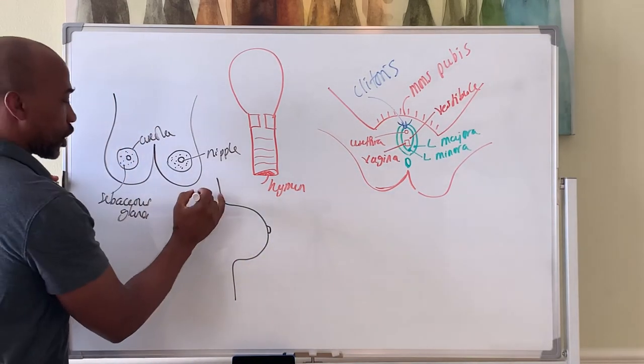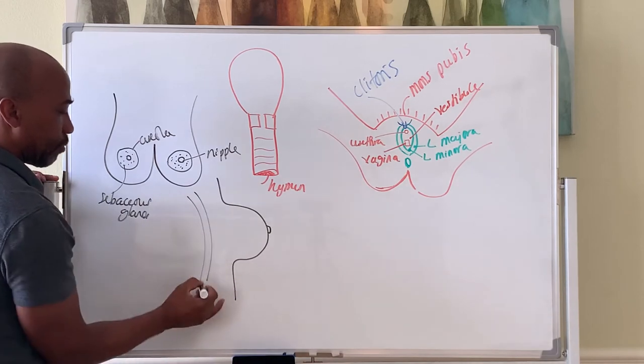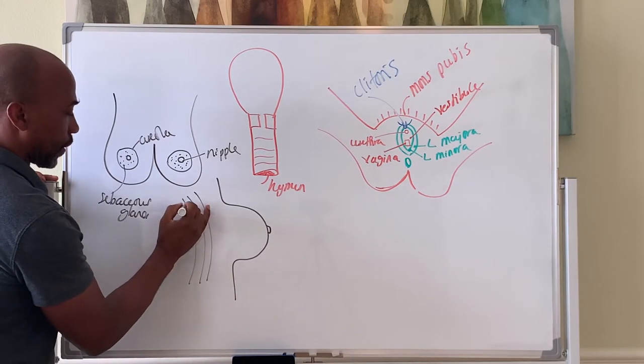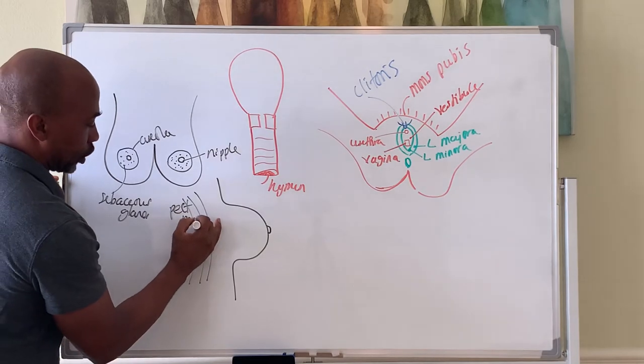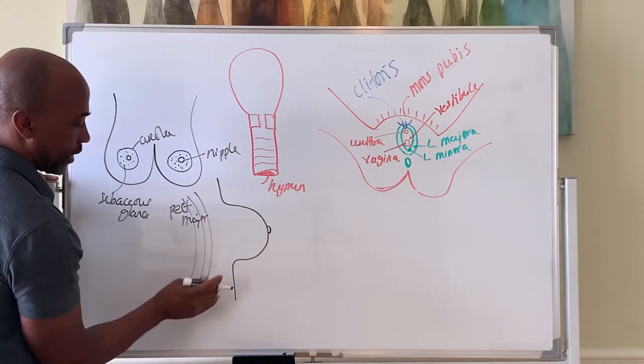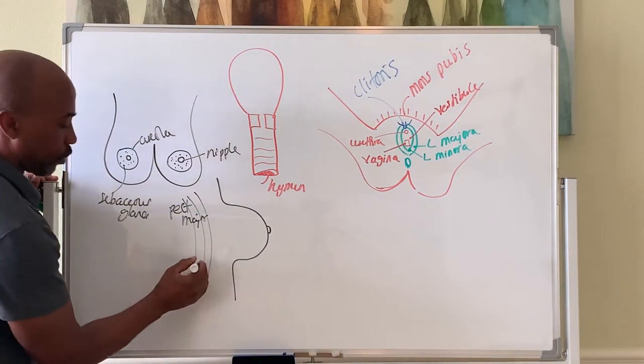The muscles behind the breast are usually the pec major and down here in the lower parts you have your intercostal muscles.